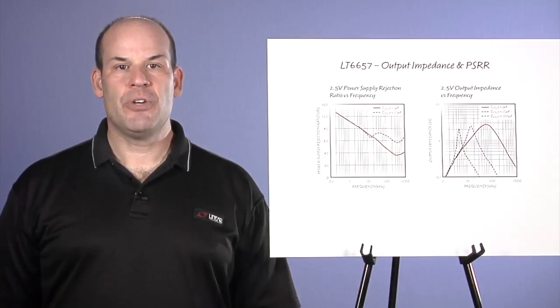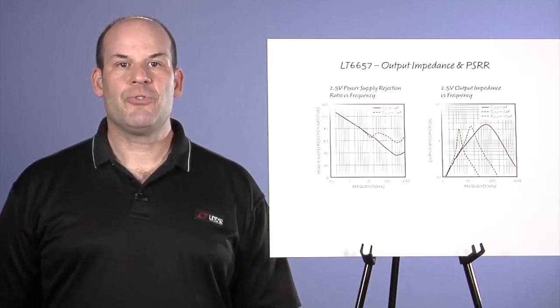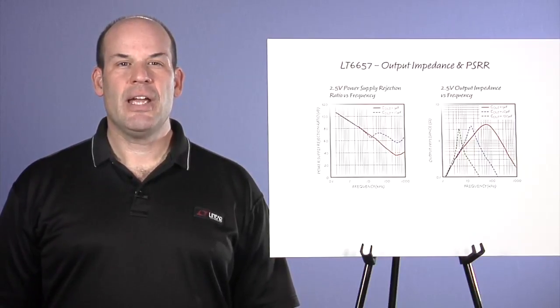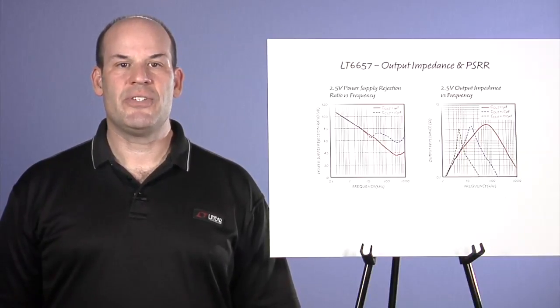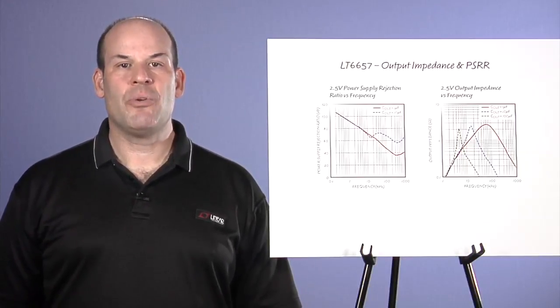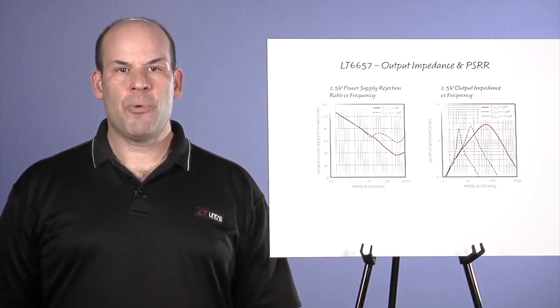As with most of Linear's voltage reference products, output impedance over frequency is low. This reduces the effect of load changes over frequency and helps prevent signals from back-feeding the reference and causing interference errors or noise. This is also critical for reference settling while driving a high performance analog-to-digital converter or surviving operational tests such as bulk current injection in automotive systems.